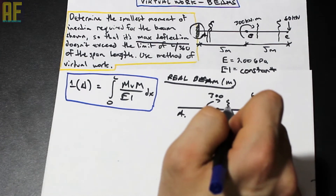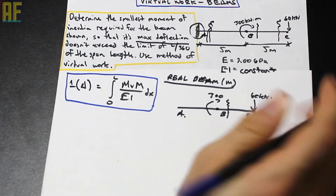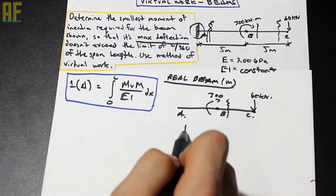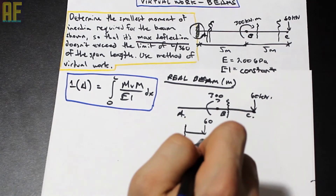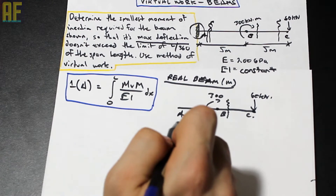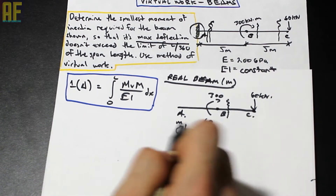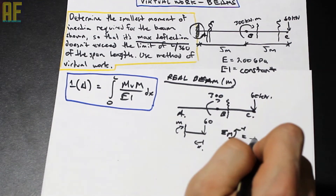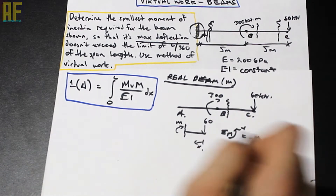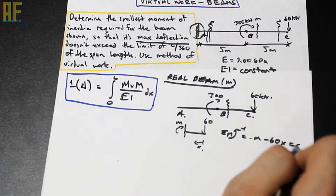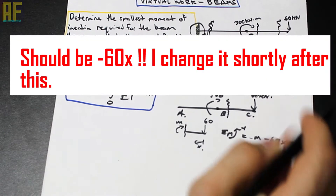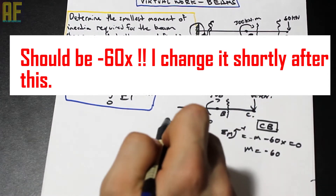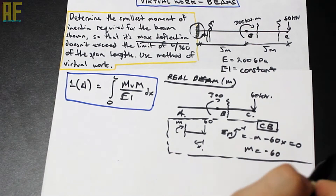So first we're going to start from C as our origin, cut the beam, and analyze just this portion. We have 60 kilonewtons, a variable distance x, and a moment M here. We just take the moment about this cut point and set it equal to zero, so we have negative M and then negative 60 times our variable distance x. We get that M is simply negative 60x, and this is for section CB for the real loading.